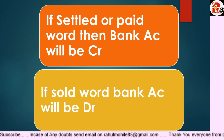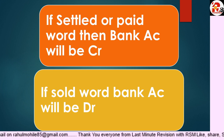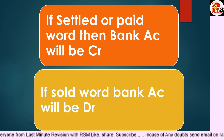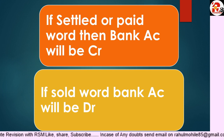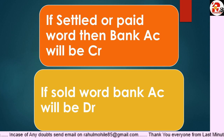The next very important point: sometimes students get confused because in some journal entries the Bank Account is credited and in others it is debited. They don't understand when to debit and when to credit the Bank Account. So I have a simple rule: if the word 'settled' or 'paid' appears in the question or adjustment — for example, 'creditors are settled' — then Bank Account will always be credited.